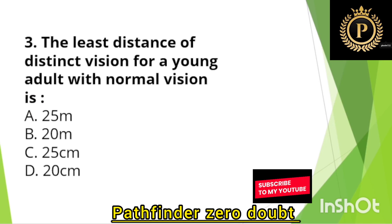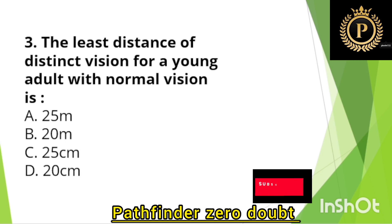The least distance of distinct vision for a young adult with normal vision — Option C: 25 cm.